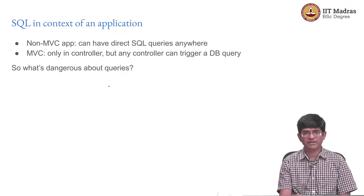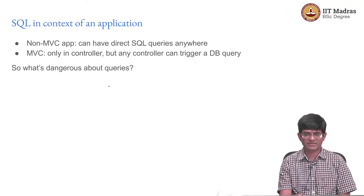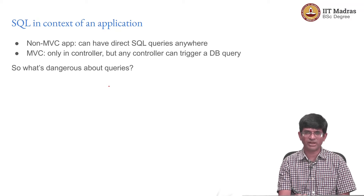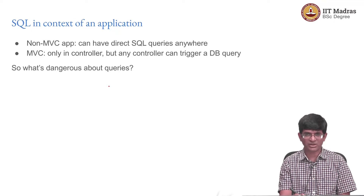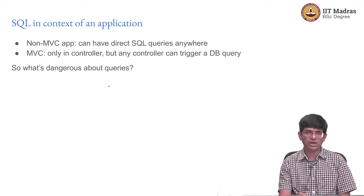In the context of an application, you are ultimately querying something from a database. If this was a non-MVC app — remember MVC is only a guideline, it is not enforced — you could have a PHP script that directly queries from a database. You could have SQL queries anywhere. In MVC, ideally the SQL is only in the model. The controller constructs the queries and sends them to the model, which is the part that actually handles communicating with the database.